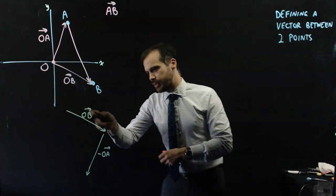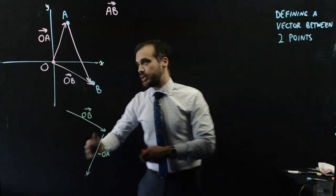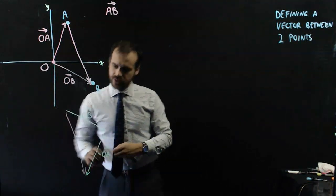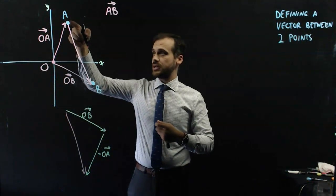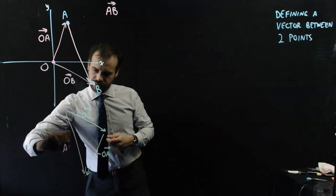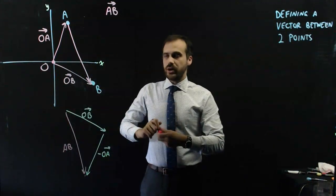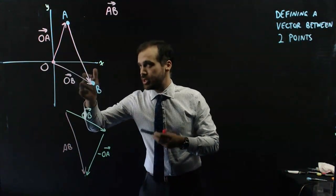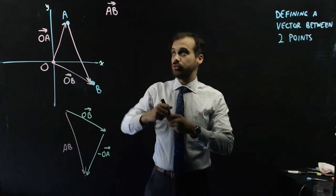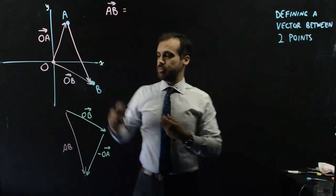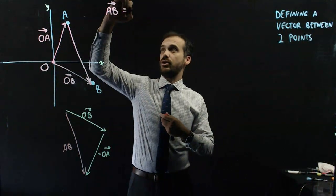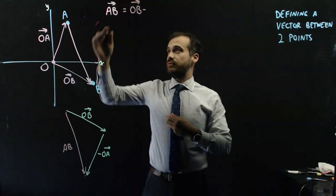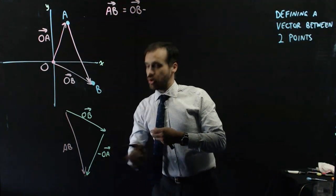Now, if we do OB plus negative OA, we will get something that looks like this, which is vector AB. All right, so what do we have? We have a vector AB, and we can say that, and this is our general rule for this kind of thing, it's going to be equal to vector OB minus vector OA.